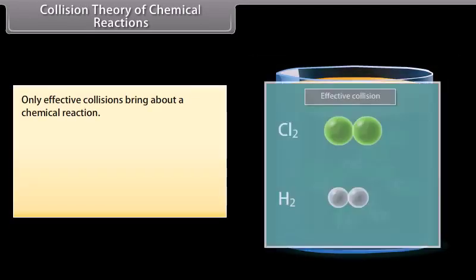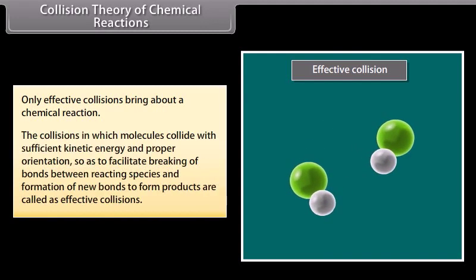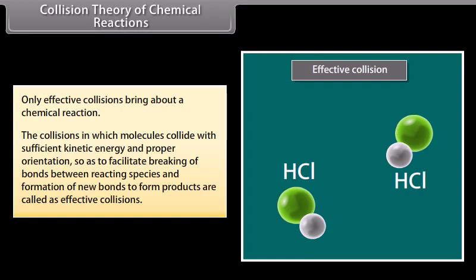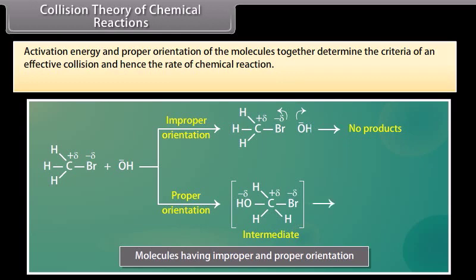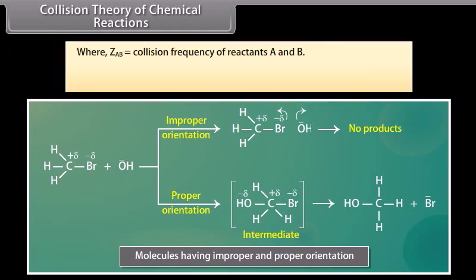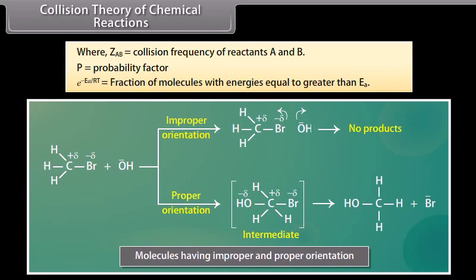Only effective collisions bring about a chemical reaction. Effective collisions are those in which molecules collide with sufficient kinetic energy and proper orientation, so as to facilitate breaking of bonds between reacting species and formation of new bonds to form products. Activation energy and proper orientation of molecules together determine the criteria of an effective collision. Rate = P × Z_AB × e^(−Ea/RT), where Z_AB is the collision frequency of reactants A and B, P is the probability factor, and e^(−Ea/RT) is the fraction of molecules with energies equal to or greater than Ea.